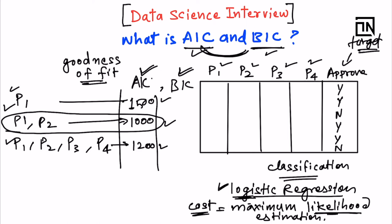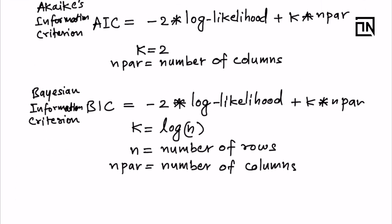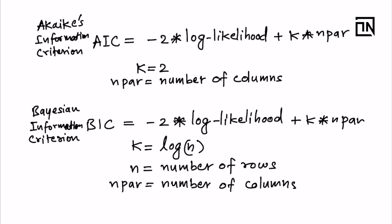All right, now coming to the formulas of these—how do we estimate these, how do we calculate these AIC and BIC? So AIC is basically short form for Akaike's information criterion, and this is equated as minus two multiplied by the log likelihood. So log likelihood is computed whenever you create a logistic regression model. So multiply it with that, and then k into number of parameters.